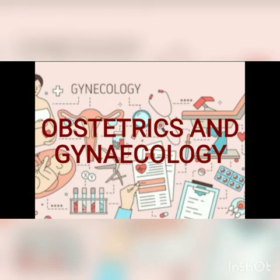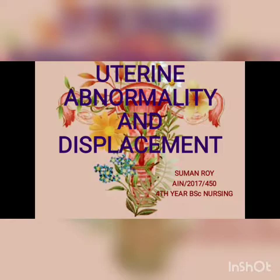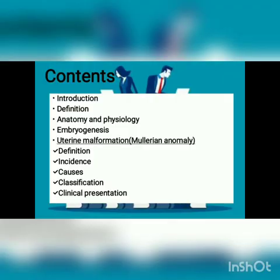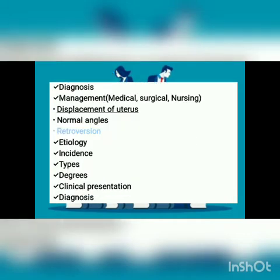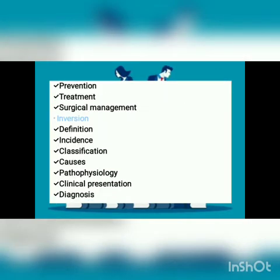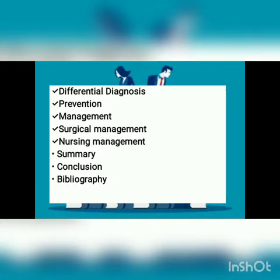Today in OBG the topic we're going to cover is uterine abnormality and displacement. The content includes introduction, definition, anatomy and physiology, embryogenesis, uterine malformation which means Mullerian anomaly, and displacement of uterus. We will study normal angles, retroversion, inversion, and finally recent advancements, summary, conclusion, and bibliography.